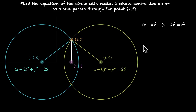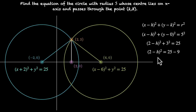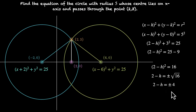Now here's the algebraic way of solving it. Assume the center is h comma k and radius r. The center lies on the x-axis, so k equals 0. The equation becomes x minus h squared plus y squared equals 25. Since the circle passes through 2 comma 3, plugging in gives 2 minus h squared plus 9 equals 25, so 2 minus h squared equals 16. Therefore 2 minus h equals plus or minus 4, giving h equals minus 2 or h equals 6. The centers are 6 comma 0 and minus 2 comma 0, confirming both equations.